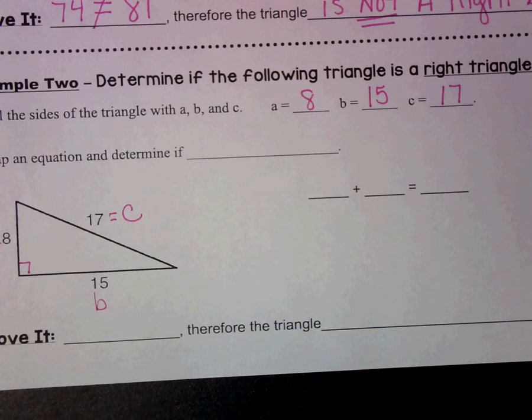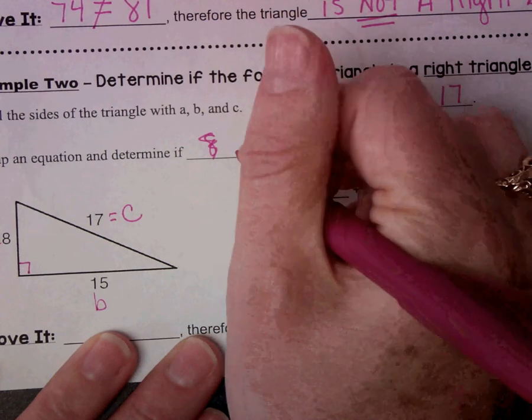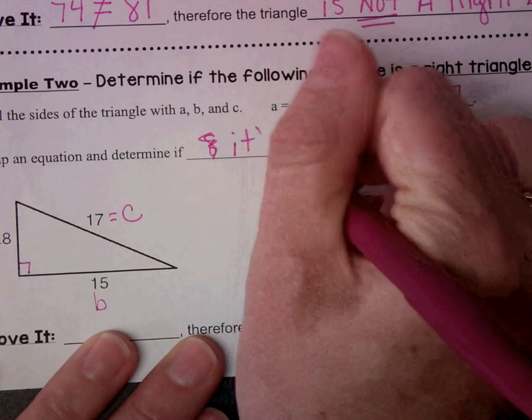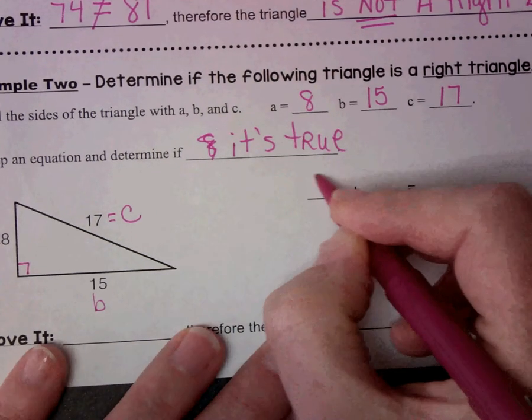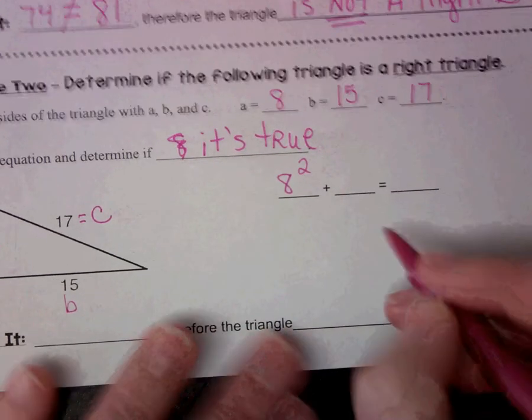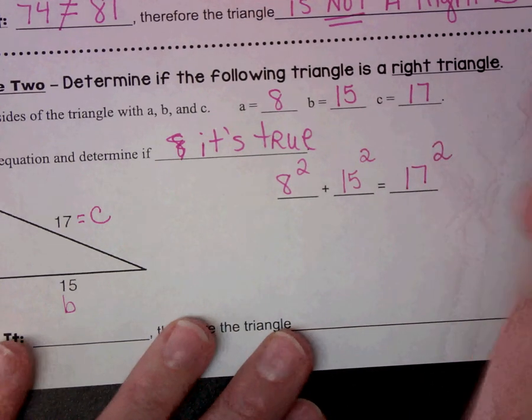So let's set up our equation. Set up an equation to determine if it's true, if it truly forms a right triangle. So 8 squared plus 15 squared equals 17 squared.